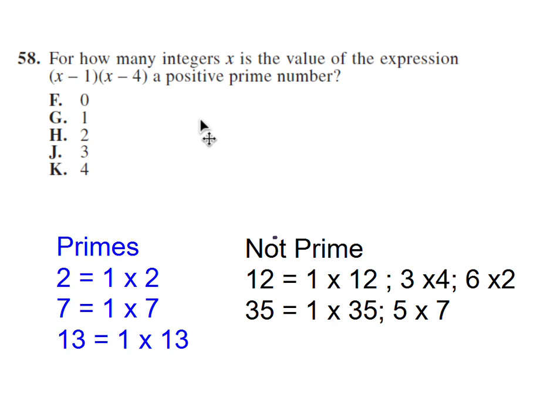Number 58. We want to know how many positive prime numbers can we get from this. Let's just remember what prime means. Prime is a number that has exactly two factors, one and itself. So these are some examples. These are not prime numbers because look, we can have 1 and 12 or 3 and 4 or 6 and 2, even odd numbers like 35. We get 5 times 7. So these are not prime.